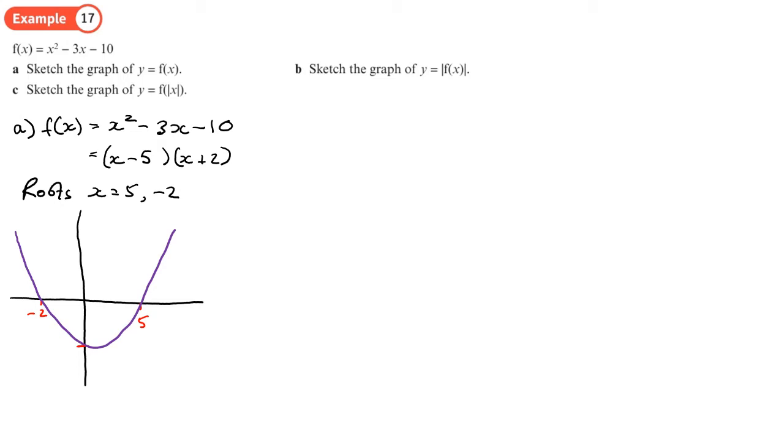So at this point, this is where x equals 0. So we just work out 0 squared minus 3 times 0 minus 10, so that just gives us negative 10. So that means that this is negative 10 here.